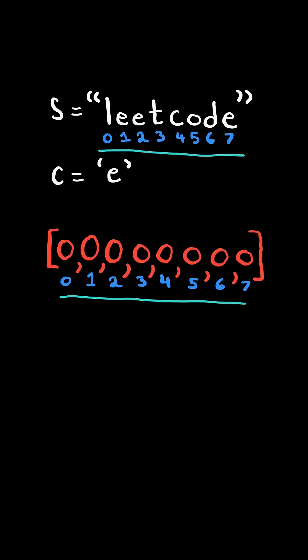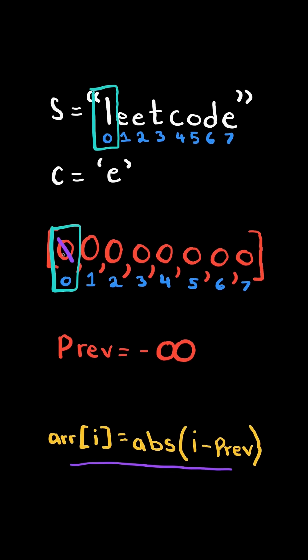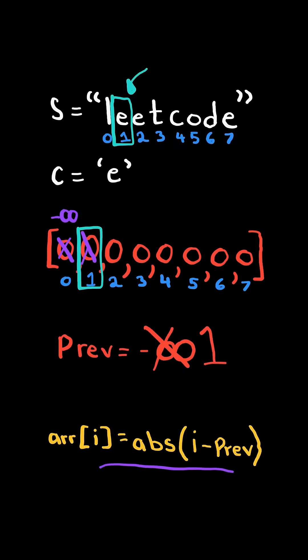First, we create an empty array of size s and keep track of the previous c. Iterate through the string and calculate the index minus the previous. When we reach a c, we update previous to the current index and calculate index minus previous.